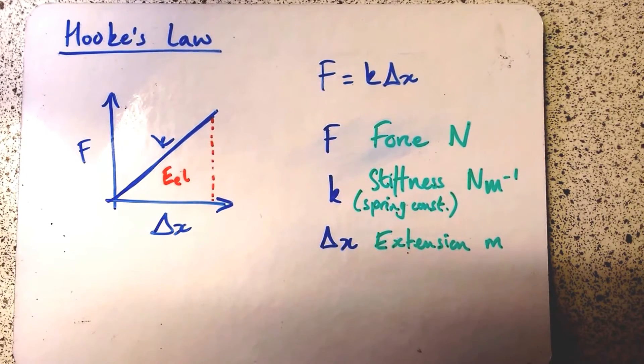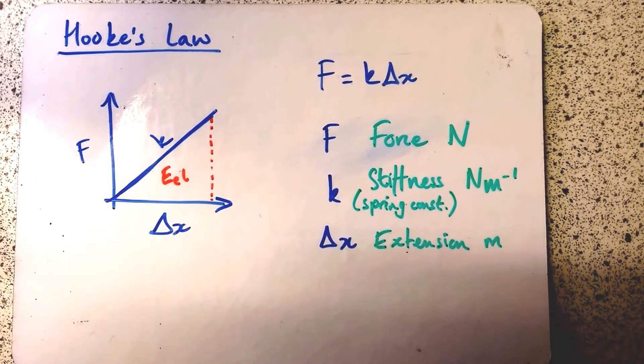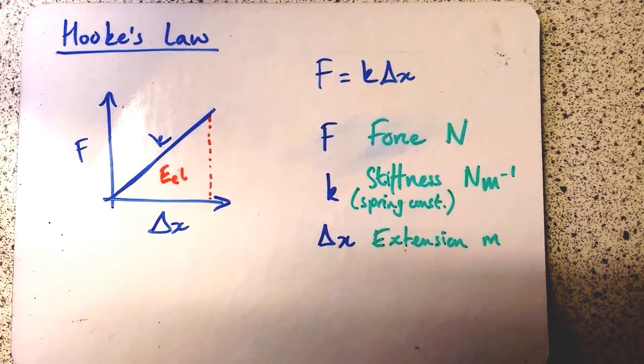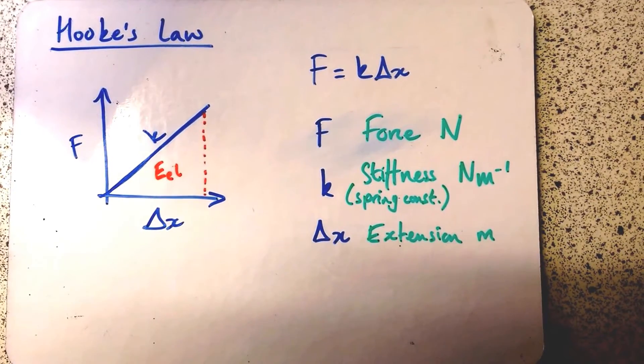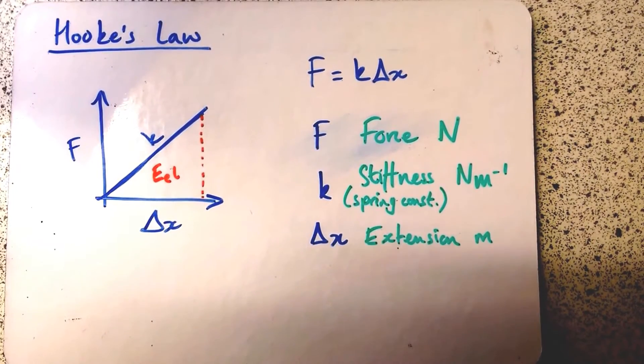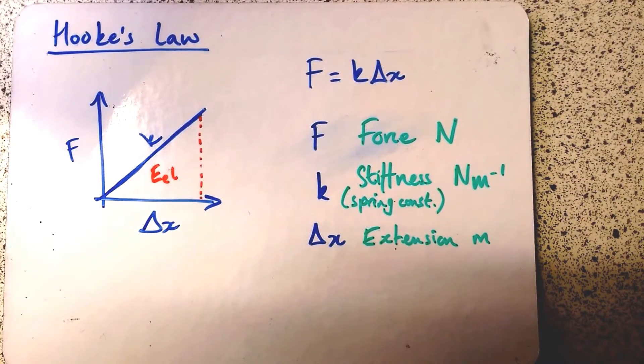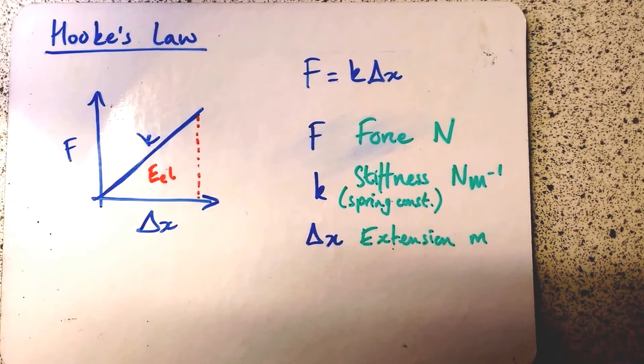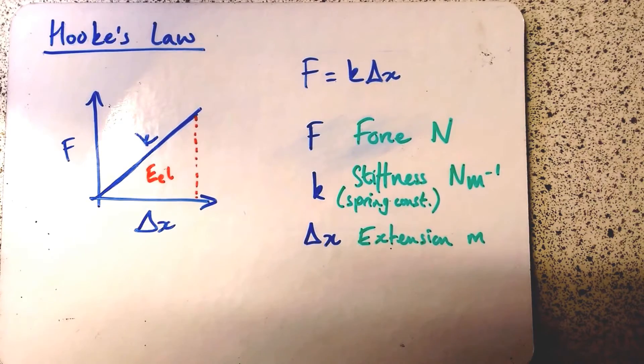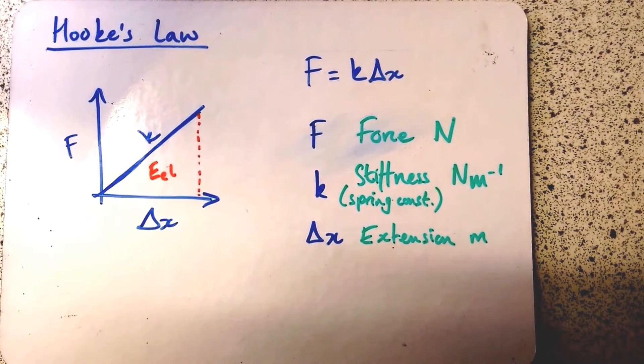I've got a graph here, a straight line graph, with force on the y-axis and extension, Δx, on the x-axis. Delta means changing. The gradient in that graph is k, the stiffness or spring constant in newtons per meter. And the area under the graph would be the elastic strain energy.